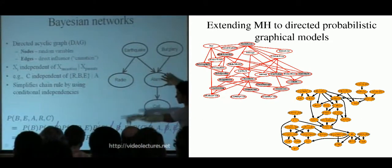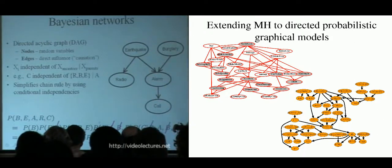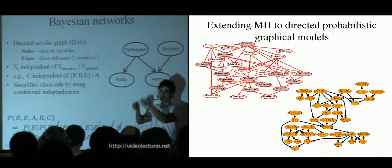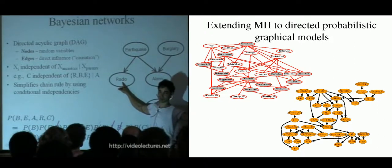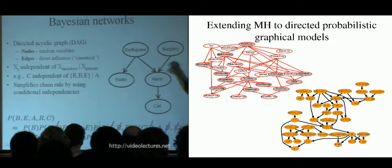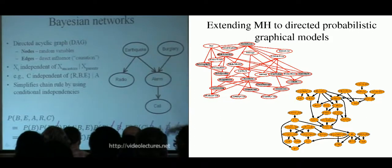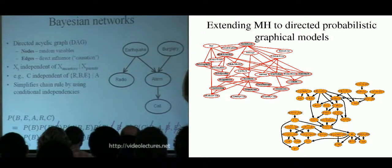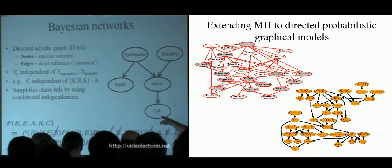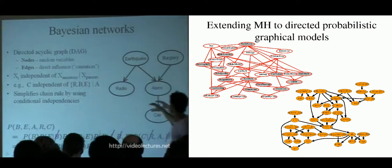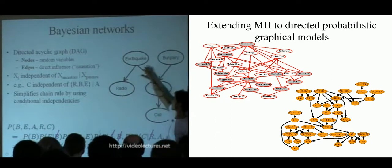The semantics here is that a variable will be independent of its ancestors given its parents. In the burglary/earthquake network: if you know the alarm status, the call will be independent of all upstream variables. There's an earthquake or a burglary — either can trigger the alarm, which then calls your cell phone.